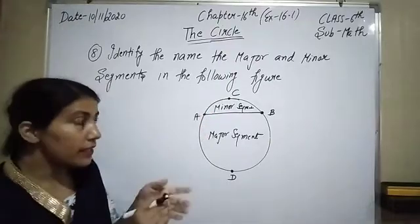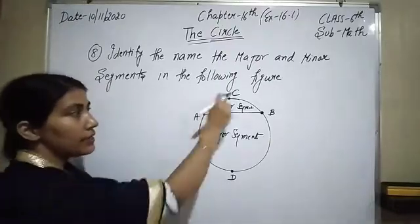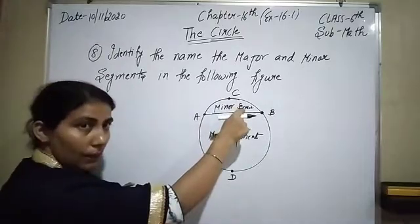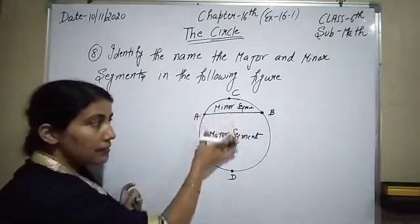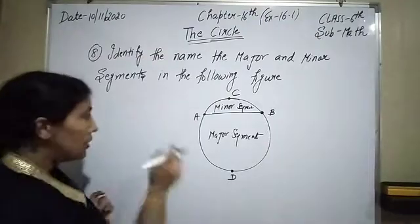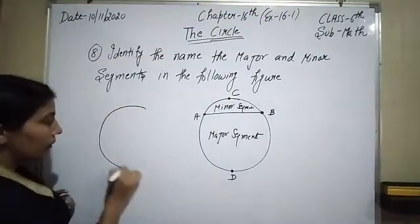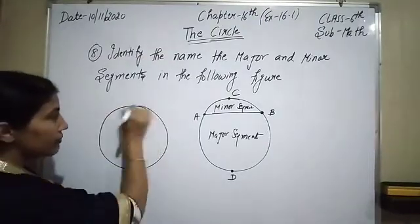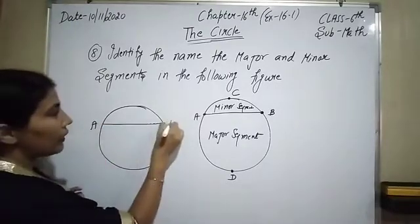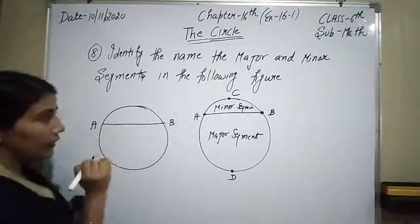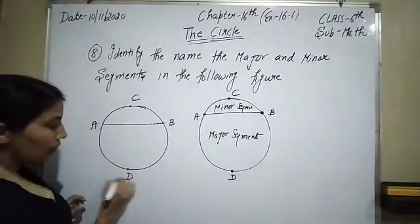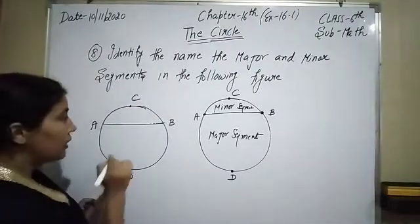When a line segment divides the circle into two parts, the shortest region is called the minor segment and the bigger region is called the major segment. Here is our chord AB, with point C on the circumference and point D on the circumference.